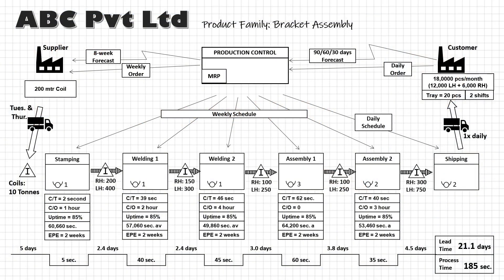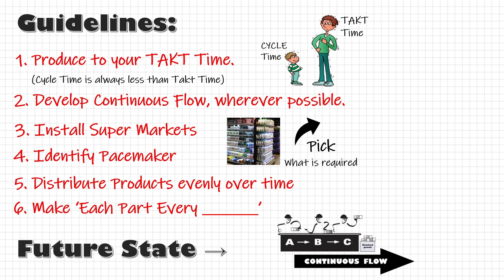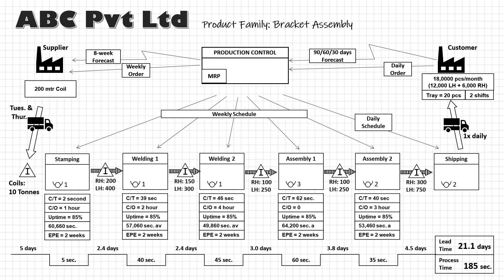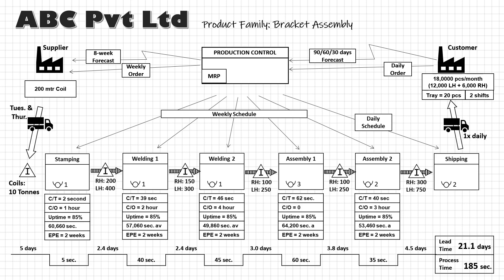If you remember from lesson 3, this is our existing value stream map for ABC Limited. In VSM, our objective is to highlight the sources of waste and eliminate them by implementing Lean principles which we have studied in the previous lessons. We want our future state value stream to be a chain of production processes where each process is linked to their customer either by continuous flow or pull. Looking back at our current state map, the big problems are this huge inventory and the disconnected process sections pushing their production to the next level based on their individual schedules.